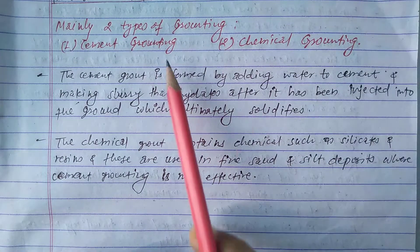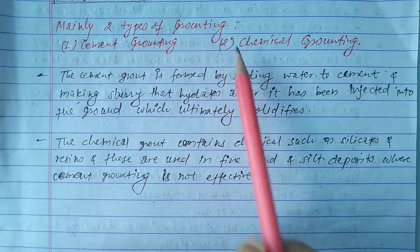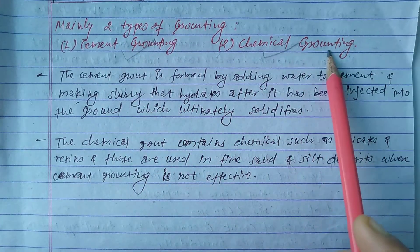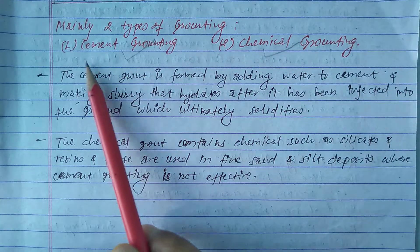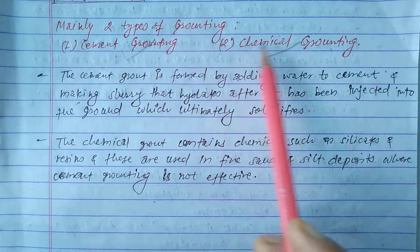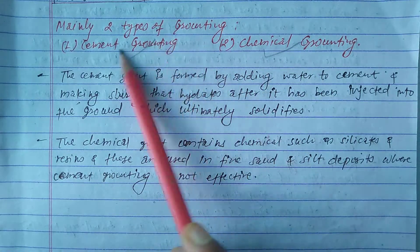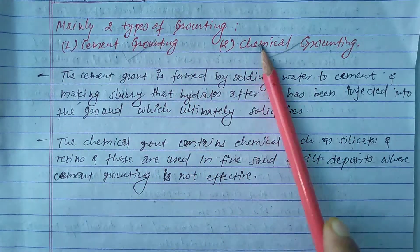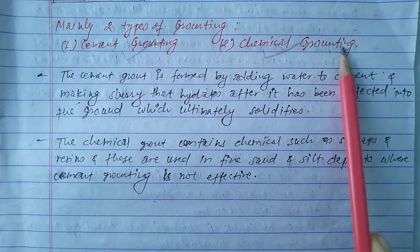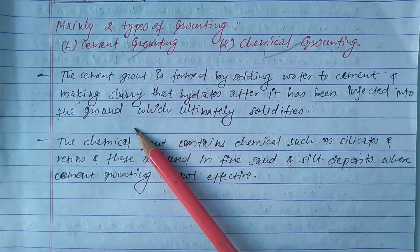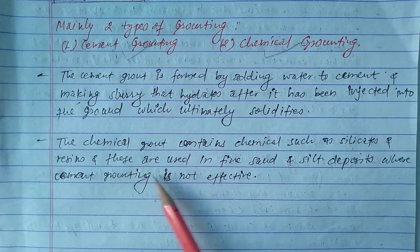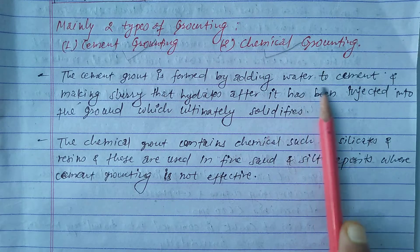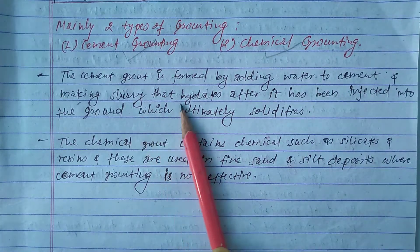There are two types of grouting. First is cement grouting, second is chemical grouting. Cement grouting uses different materials than chemical grouting. Cement grouting is formed by adding water to cement and making a slurry.